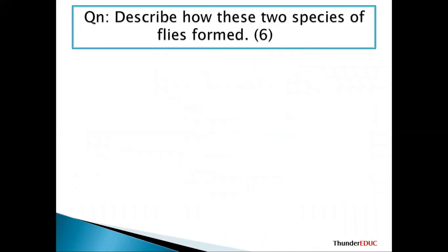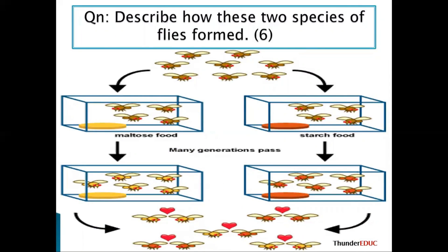Describe how these two species of flies were formed. Now they have brought an example of flies. Looking at these flies as if they are in the lab, they are being separated by a water box. At first it was one population; now the population is separated by the box — the geographical barrier. There is no gene flow between them. And because they are being separated differently, they have different environmental conditions: here we have starchy food and here we have maltose.